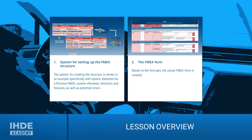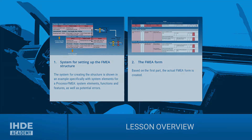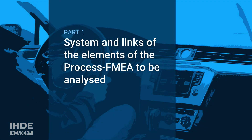This lesson is divided into two chapters. In the first chapter, we look at the system with which an FMEA is set up — we discuss system elements, functions, characteristics and potential failures. The actual FMEA form is then created in the second chapter. Let's start with the systematic structure of the process FMEA and the explanation of how the individual elements are related to each other.